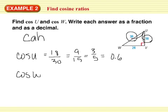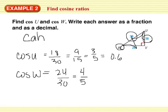Cosine W. I get adjacent over hypotenuse, which is twenty-four over thirty. Simplify. Six goes into twenty-four four times. Six goes into thirty five times. I get zero point eight. Cool.